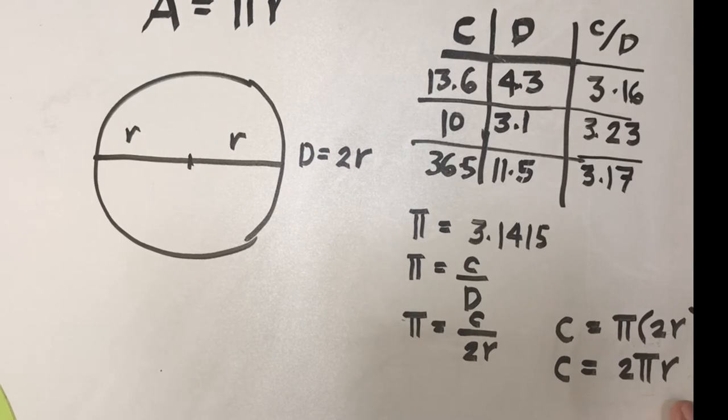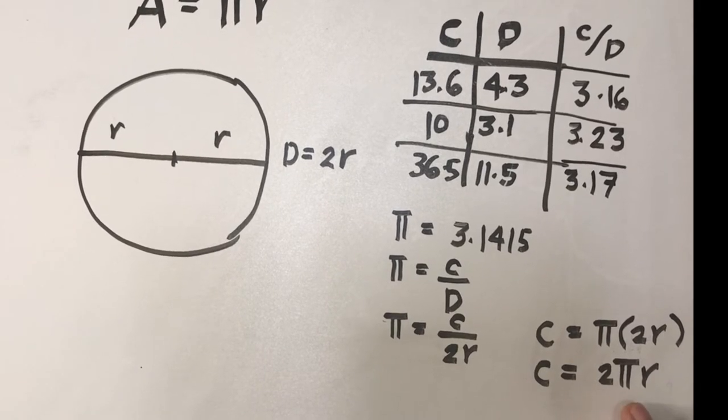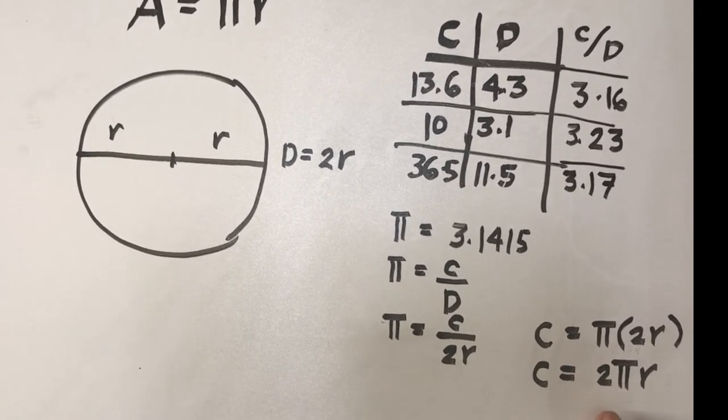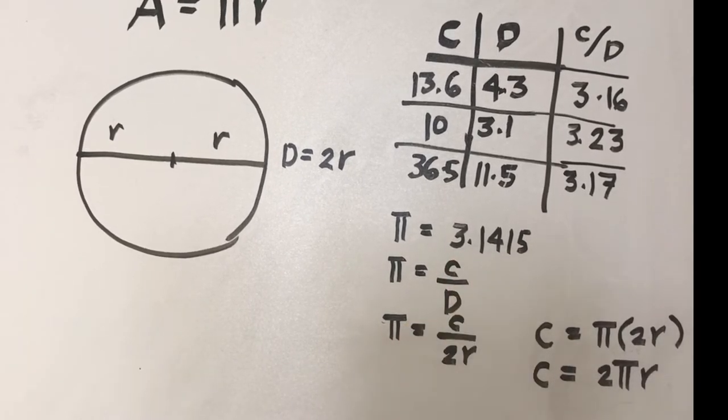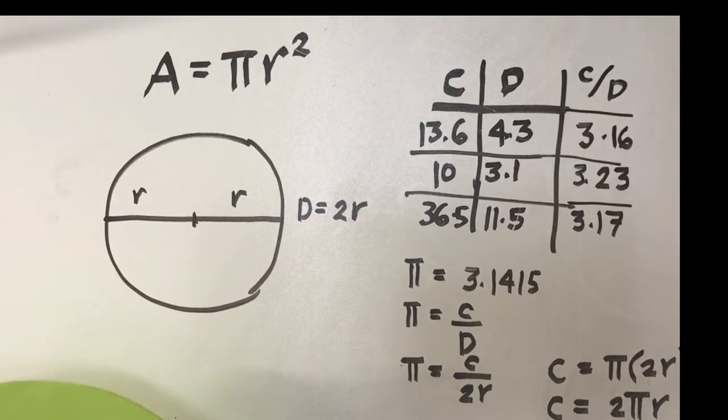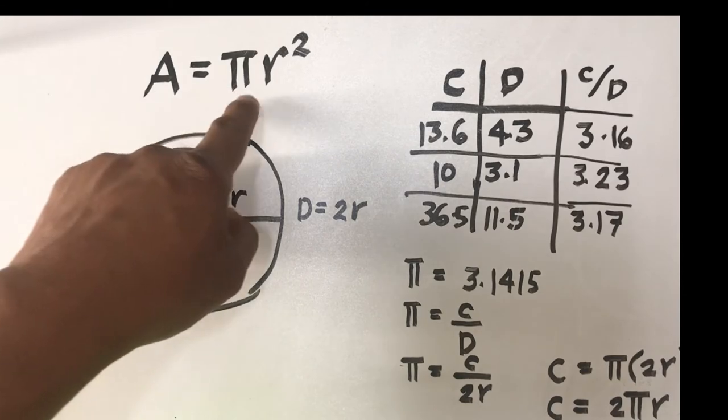Now r is a variable, whereas 2 and π are constants. π has a fixed value, a constant value of approximately 3.14. Now let's move on to the derivation of this formula A equals πr².